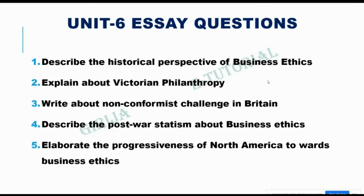The important questions in Unit six. Question number one: Describe the historical perspective of business ethics. Question number two: Explain about Victorian philanthropy. Question number three: Write about the non-conformist challenge in Britain. Question number four: Describe post-war statism about business ethics. Question number five: Elaborate the progressiveness of North America towards business ethics. These are the important questions in Unit six.